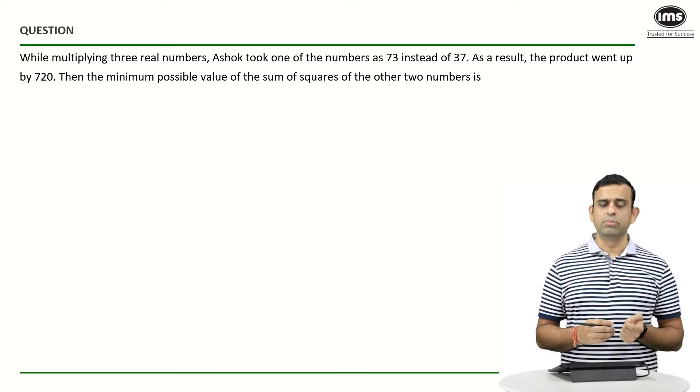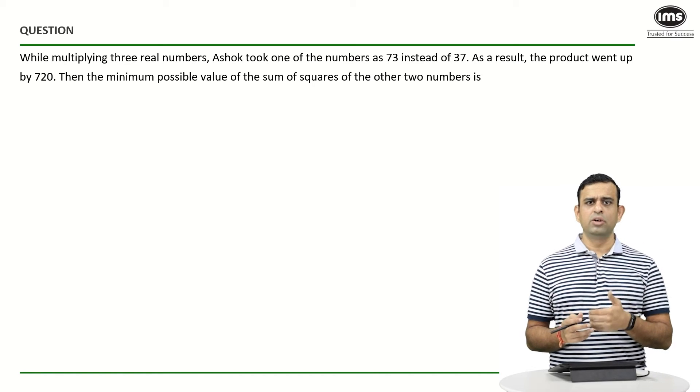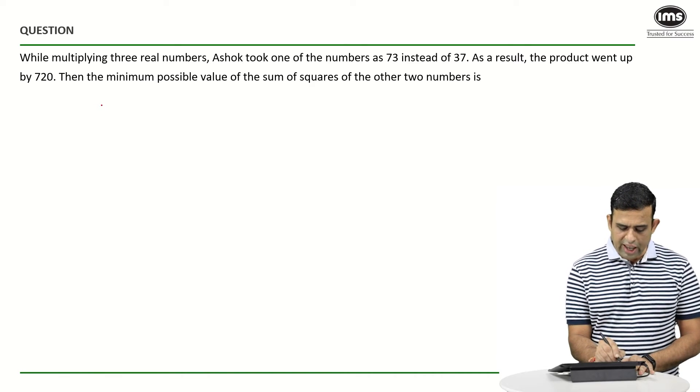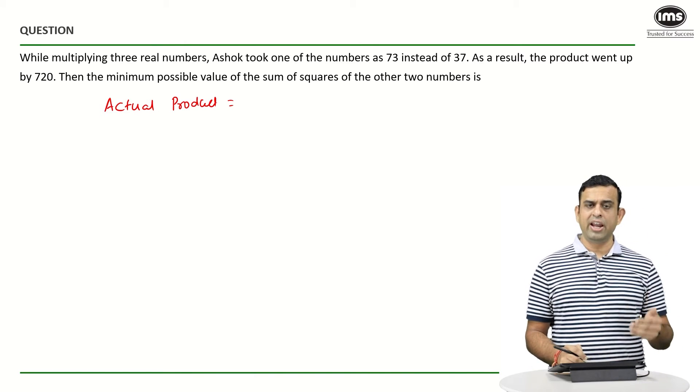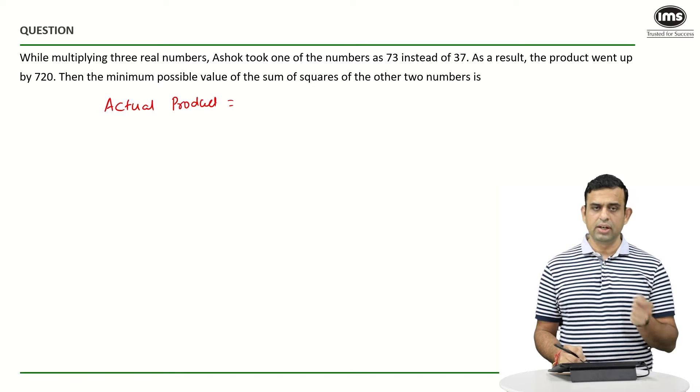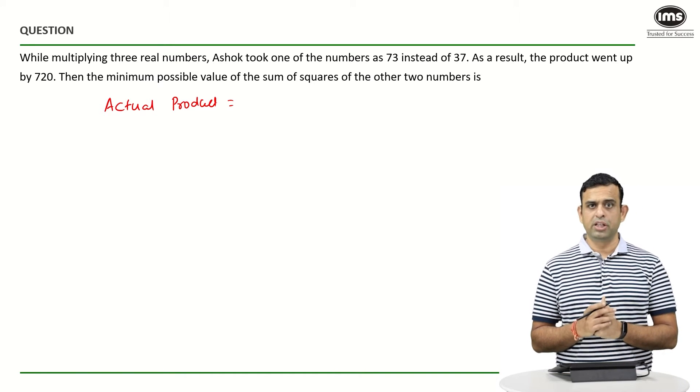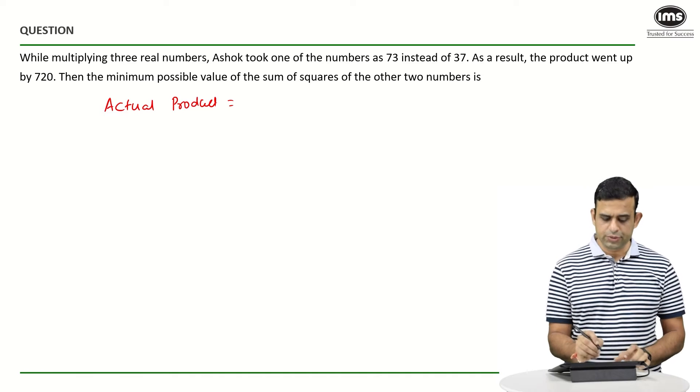Suppose if I say my other two numbers happen to be x and y, then can I say the actual product should have been you are going to multiply x, y, and the number 37 in this particular case? So my product should be equal to 37 times xy.